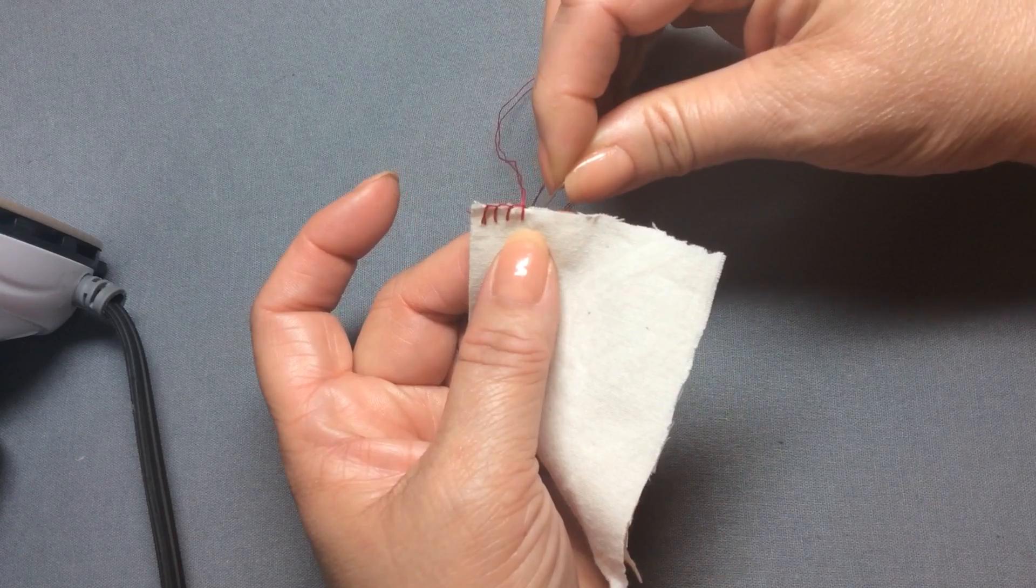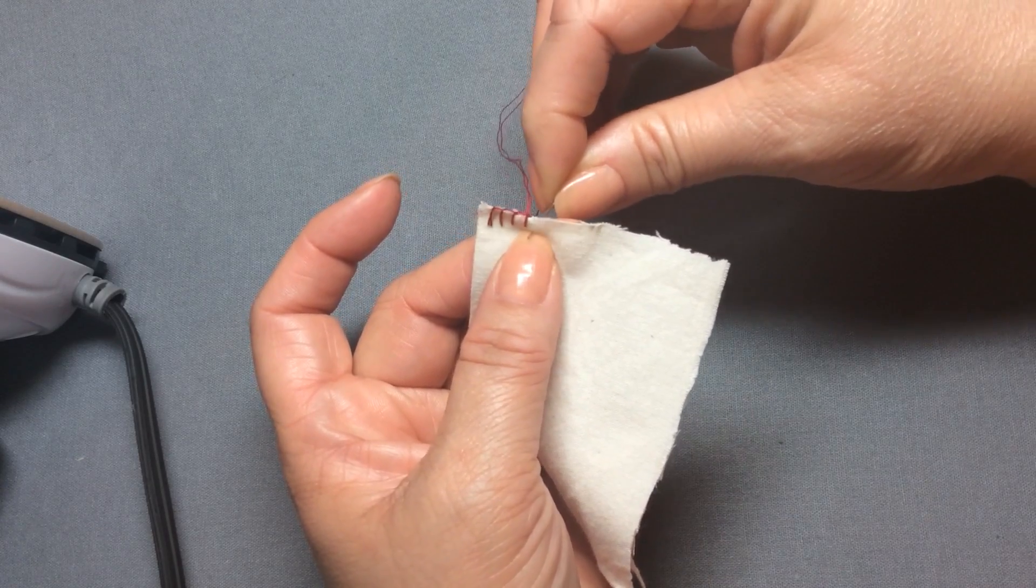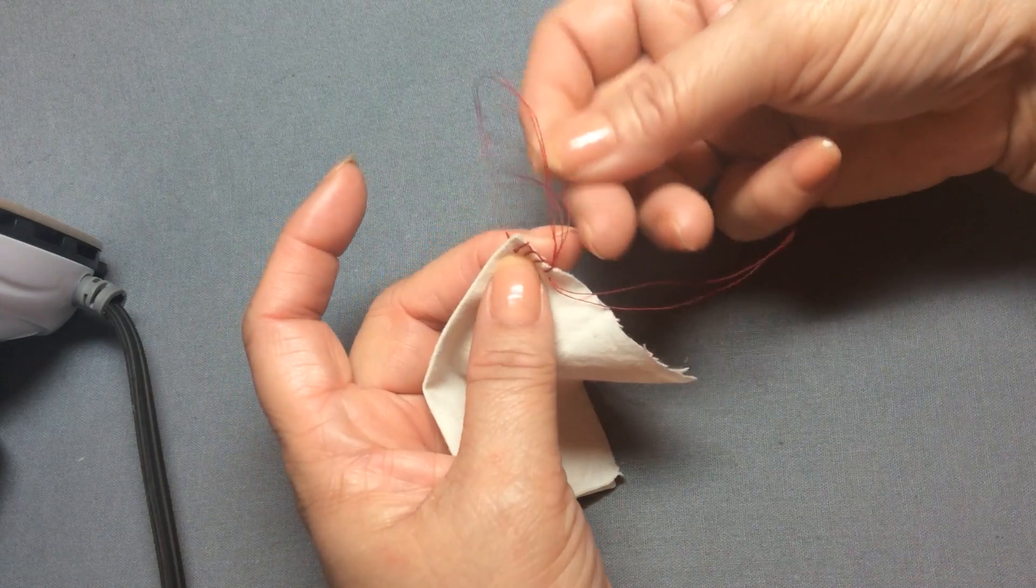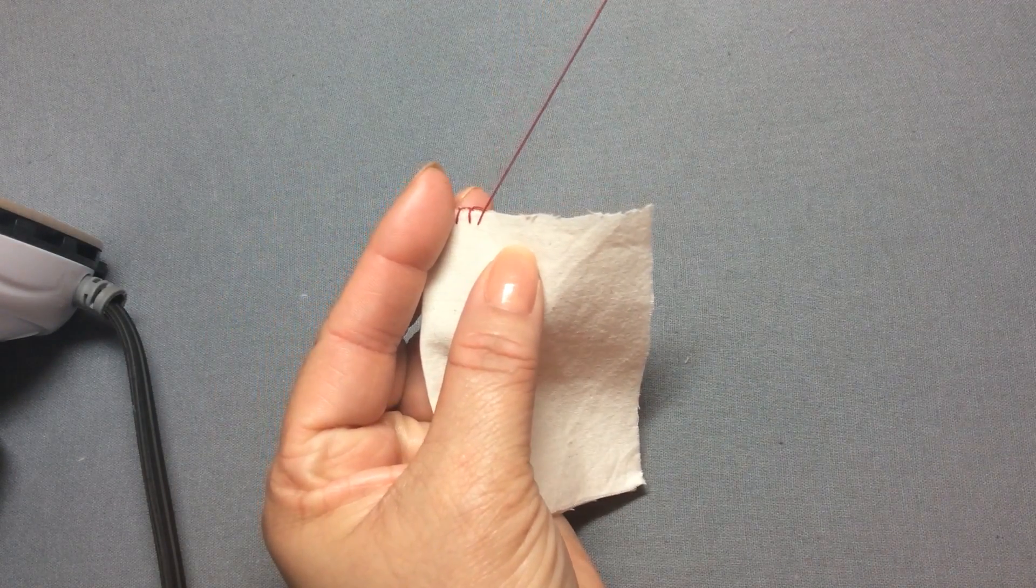Again, I'll do it one more time. Put your needle through. The closer you do this, the more like an overlock stitch it's going to look, and it's fairly simple.